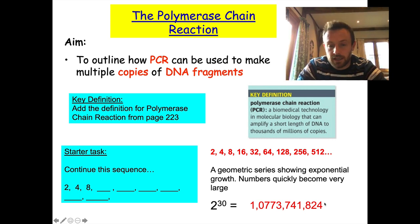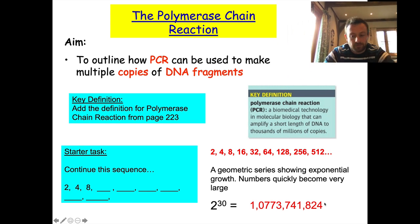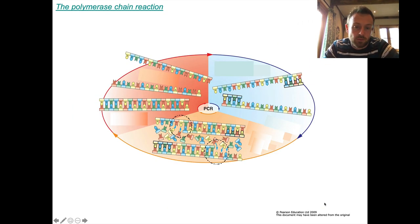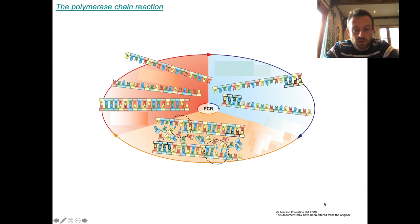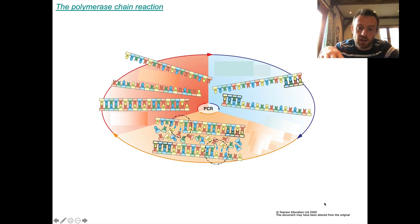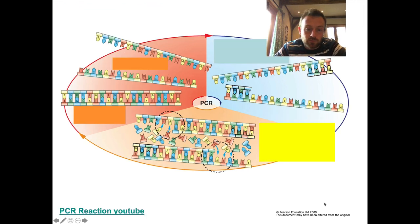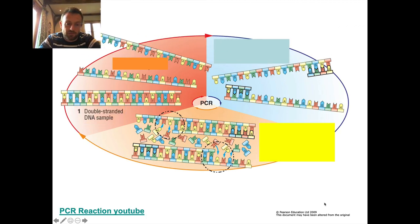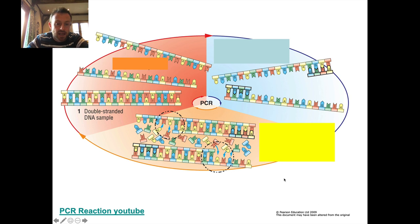That's why PCR is an extremely powerful tool. We'll look at some of its applications later. The process of the polymerase chain reaction is summarised in this diagram here. If you're one of my students, you should really print this slide off so we can annotate around it. We start on the left with a double-stranded DNA sample — the DNA we want to copy.